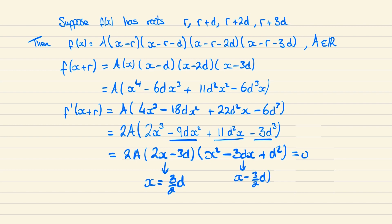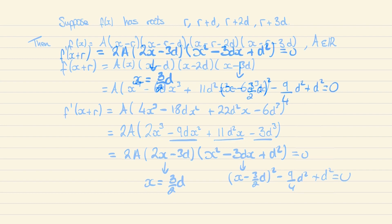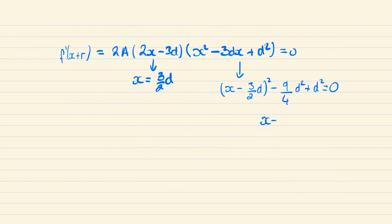So this will be x minus 3 over 2d squared minus 9 over 4d squared and add back in the d squared. And simplifying this further we have x minus 3 over 2d is equal to plus or minus root 5 over 2d. And so x equals 3 over 2d plus or minus root 5 over 2d.